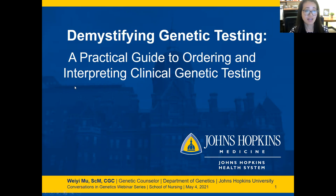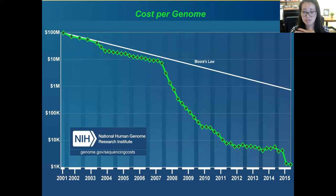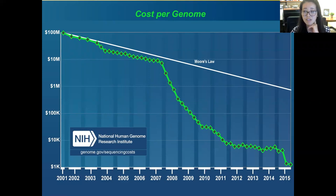I only have a few background slides, but I thought it was important to remind everyone how prevalent clinical genetic testing has become, not just in genetic medicine but really across all specialties. This graph depicts the cost per genome from when we first did the human genome sequencing project in the early 2000s to five years ago — the cost has really dropped. You can see an inflection point around 2007 to 2008, when next generation sequencing technologies became readily available.